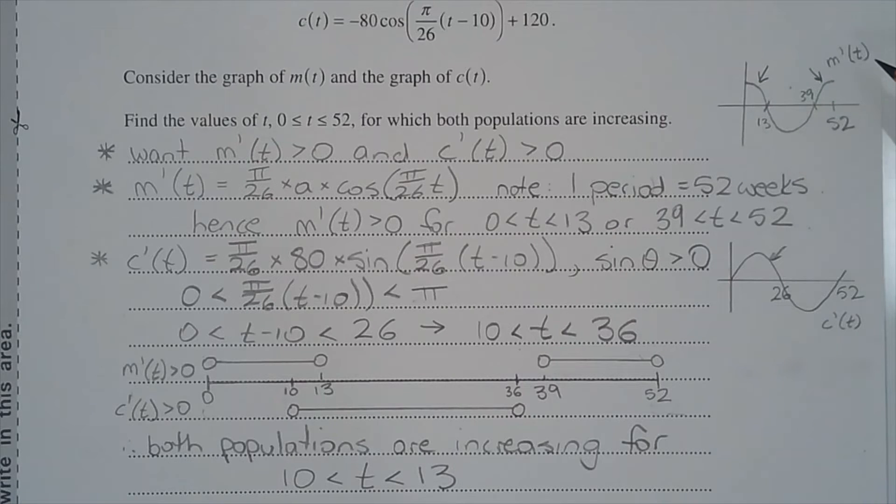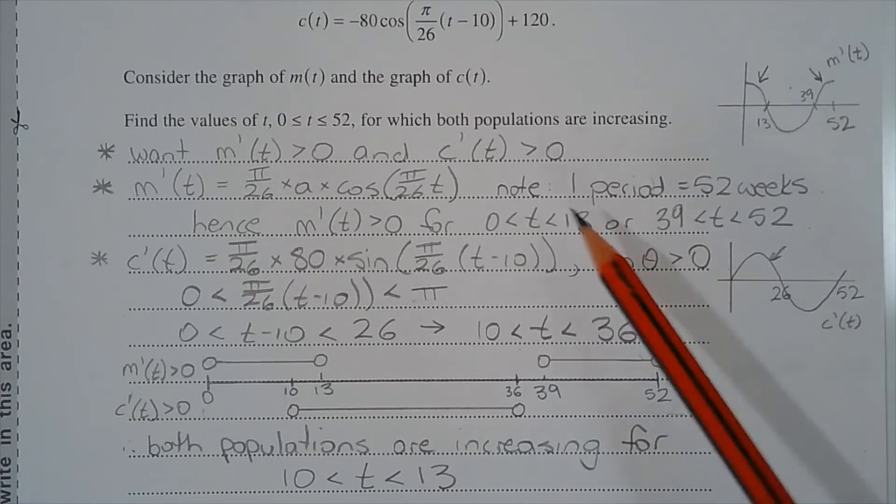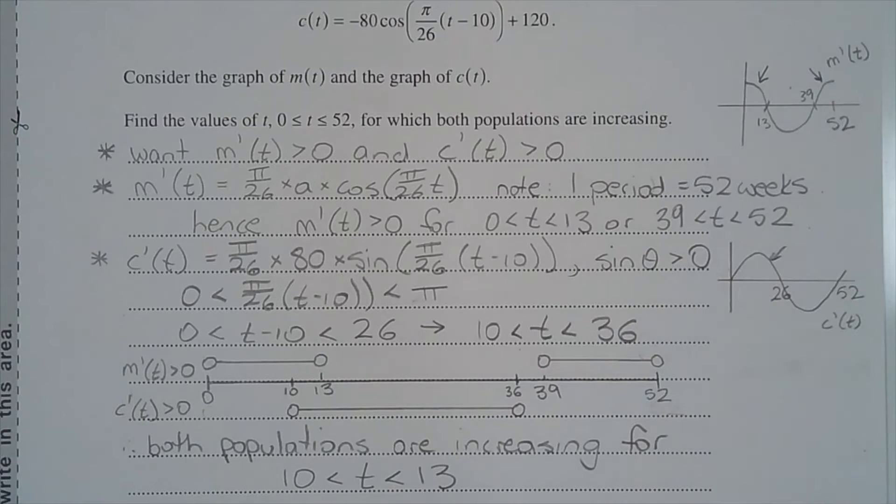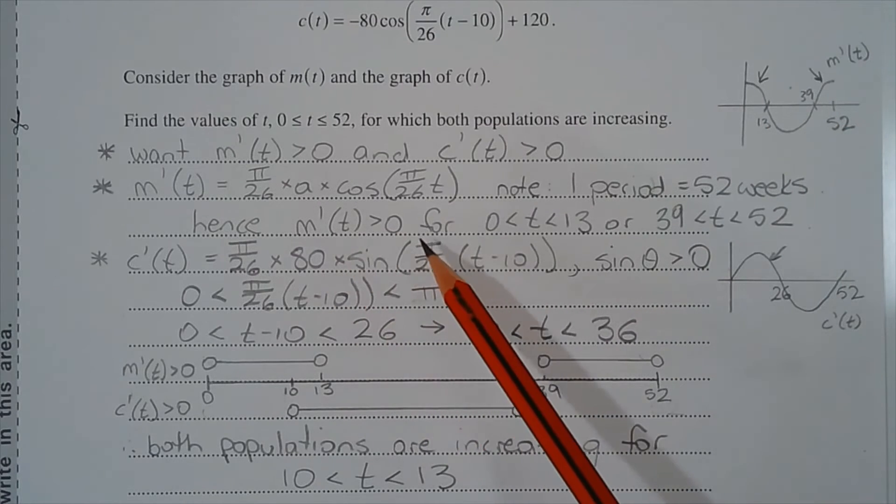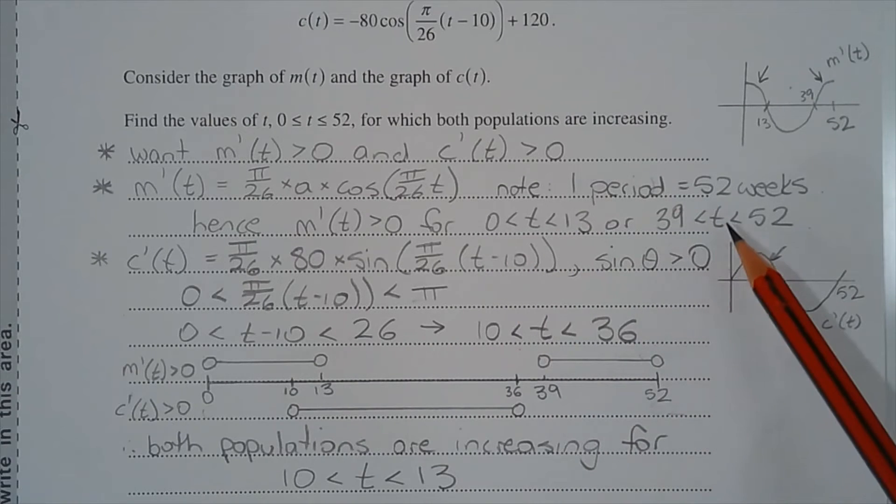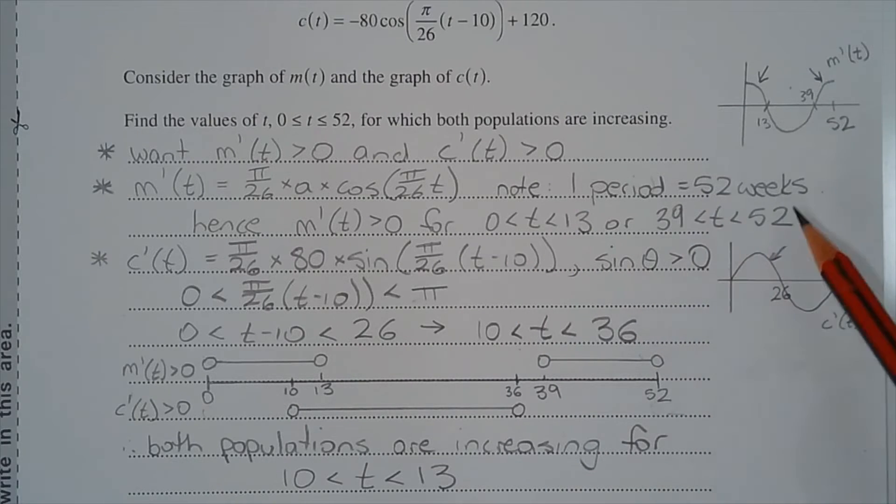Here's a rough sketch of m'(t), which shows the dilated cosine curve. Now note that due to the dilation, one period equals 52 weeks. And the part of the cosine curve that's above the x-axis, which is the part that we're interested in, is between 0 and 13 and 39 and 52 weeks. So m'(t) is greater than 0 for t between 0 and 13 or t between 39 and 52.